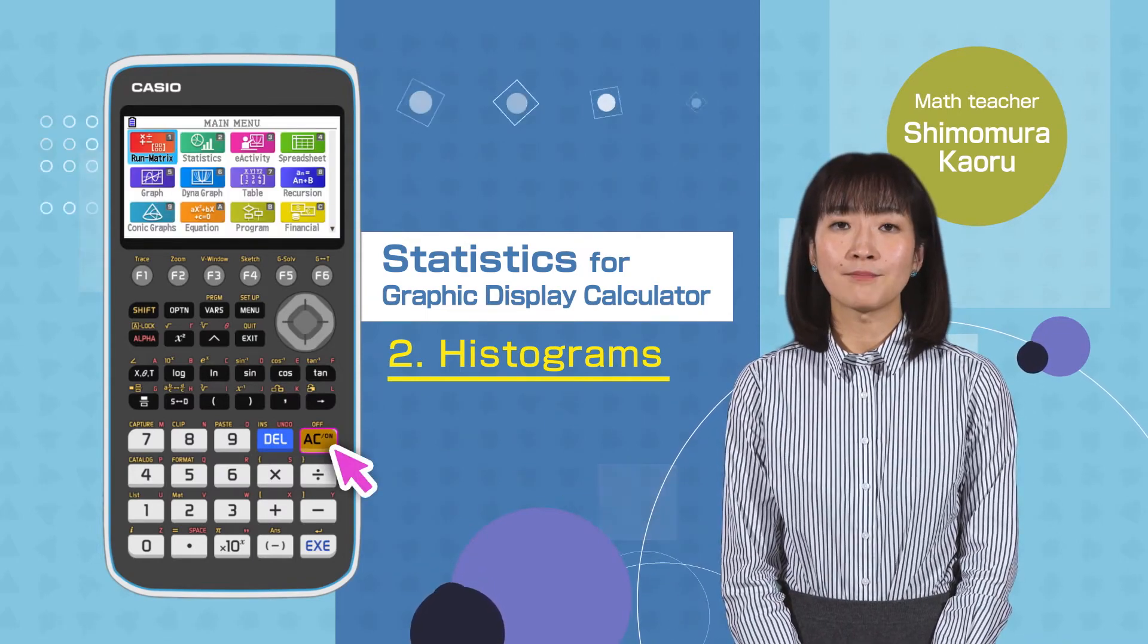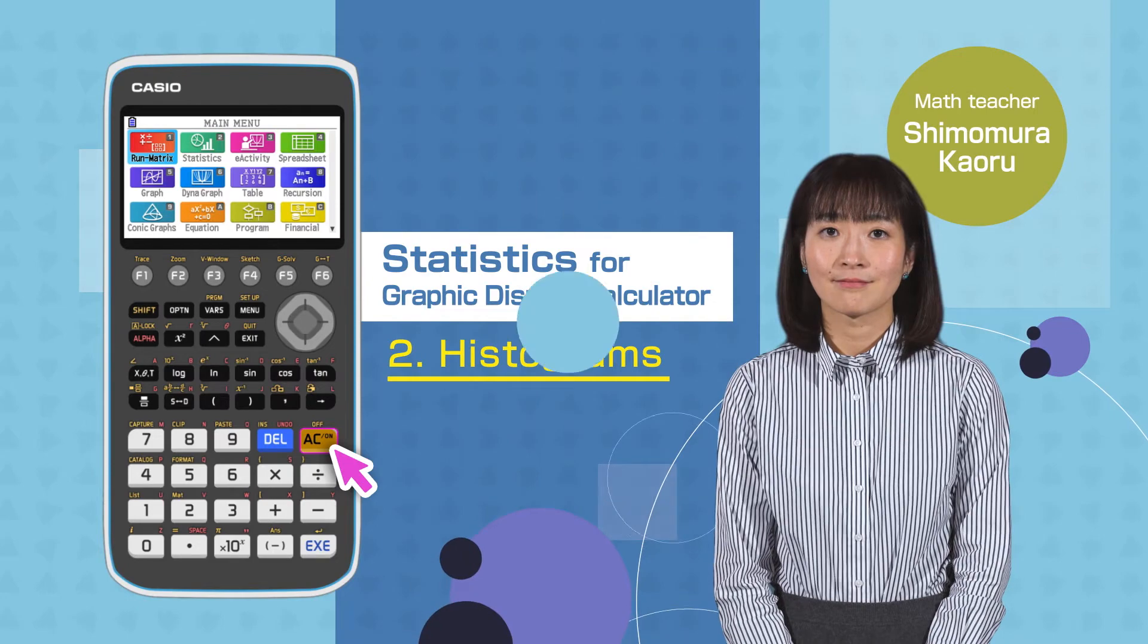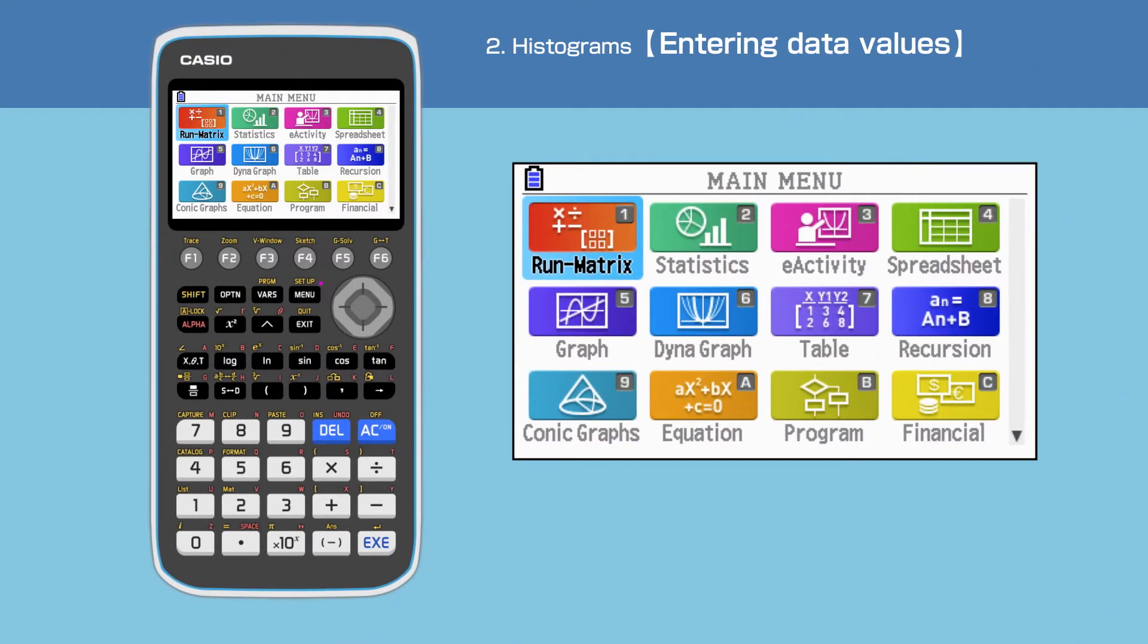Switch on your calculator by pressing the AC button. Press the menu button to open the main menu, then move the cursor or press 2 to choose the statistics function.